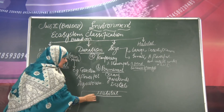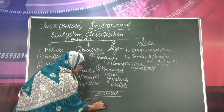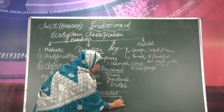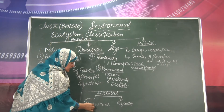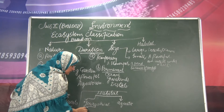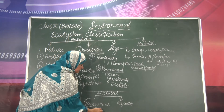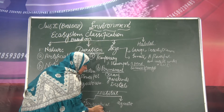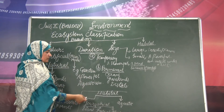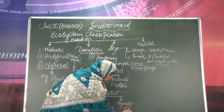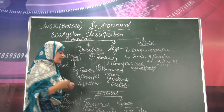Ecosystem based upon habitat can be either terrestrial or aquatic. Under the terrestrial category, examples include desert, grasslands, forests, and so on.